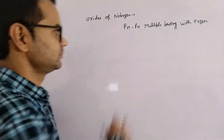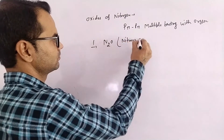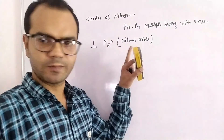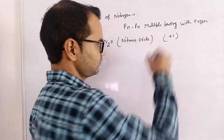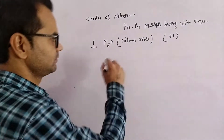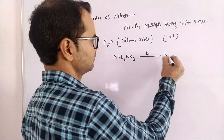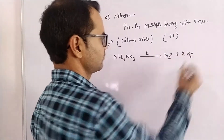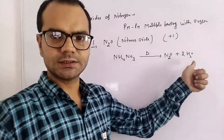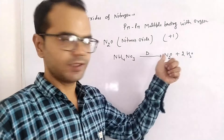The first oxide is Nitrous Oxide, N₂O. In Nitrous Oxide, the oxidation state of nitrogen is +1. It is prepared by heating Ammonium Nitrate. When Ammonium Nitrate is heated, Nitrous Oxide and water are released. This N₂O gas is colorless and unreactive, having a pleasant smell.